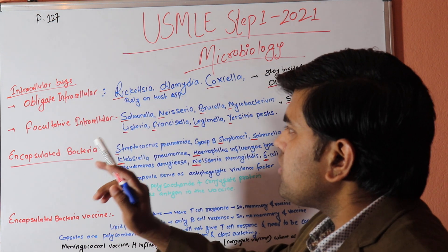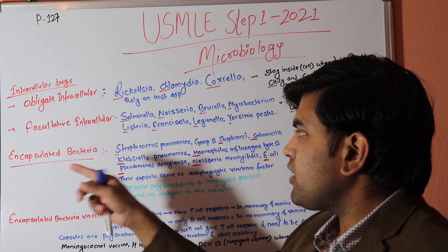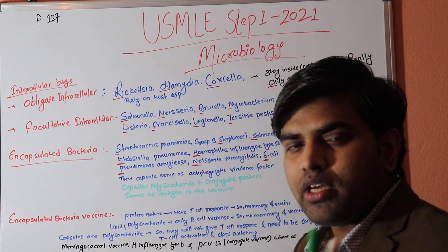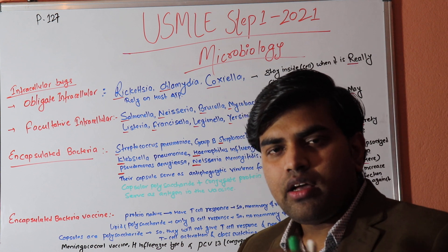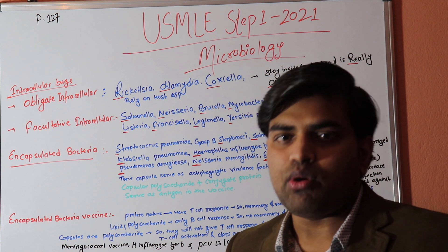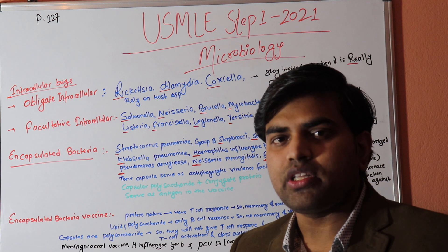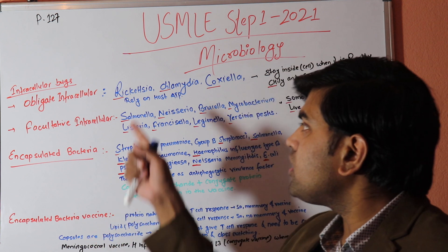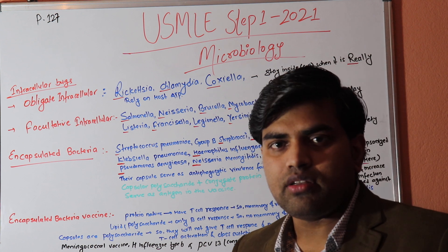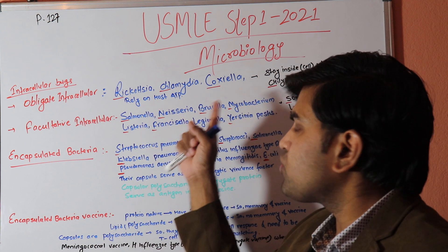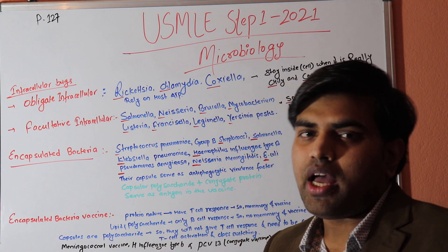Now, intracellular bugs can be two types: obligate intracellular and facultative intracellular. Obligate intracellular organisms remain inside the cell completely — they cannot survive outside the cell. There is no option; they cannot be found outside. These are Rickettsia, Chlamydia, and Coxiella. They cannot survive outside the cell, so they rely entirely on the host's ATP.